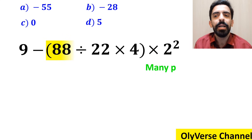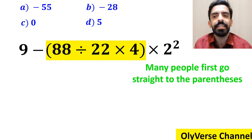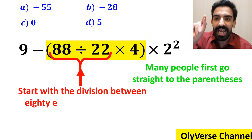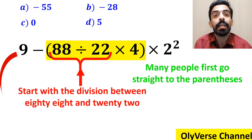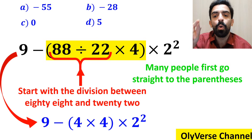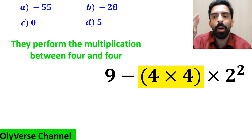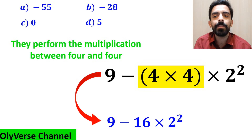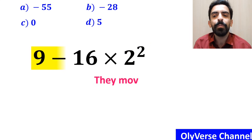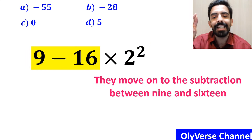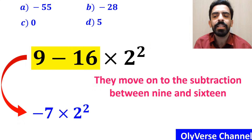To solve this question, many people first go straight to the parenthesis and solve it with the division between 88 and 22. So they rewrite this expression as 9 minus (4 times 4) multiplied by 2 squared. Then they perform the multiplication between 4 and 4 and simplify this expression to 9 minus 16 multiplied by 2 squared.